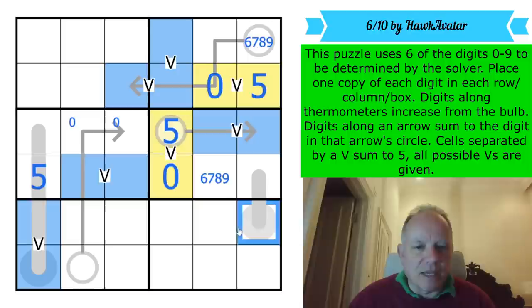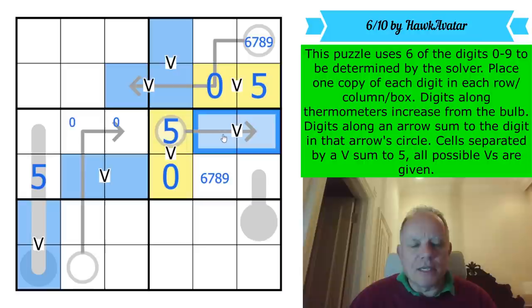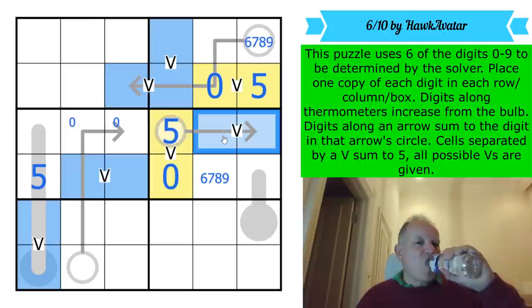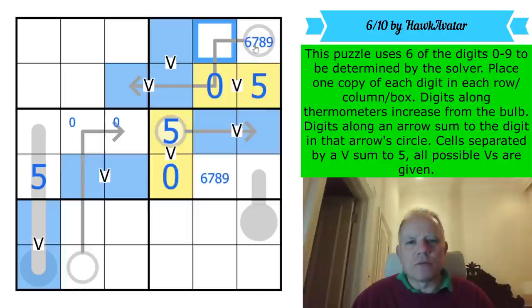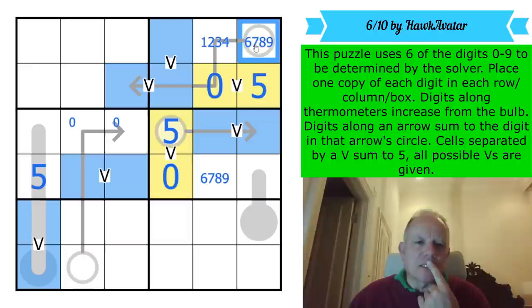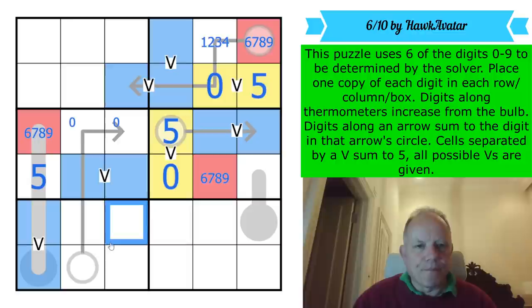Now, zero. I was tempted to fill in zero here, but actually zero could be on the bulb. It would be a very realistic thermometer, actually, to have zero on a bulb. Oh, no. No, real life thermometers go down to minus numbers. So that's not even true. Now, this has not helped me establish what the blue Vs are. Are they one, four, or are they two, three? I don't know. Now, up here, we've got five plus zero plus one, two, three, or four. Oh, well, that's interesting. So all the remaining digits, apart from the six, seven, eight, nine, are low. They're five or less. So that one actually is this high digit, whatever it is. Let's make it red.